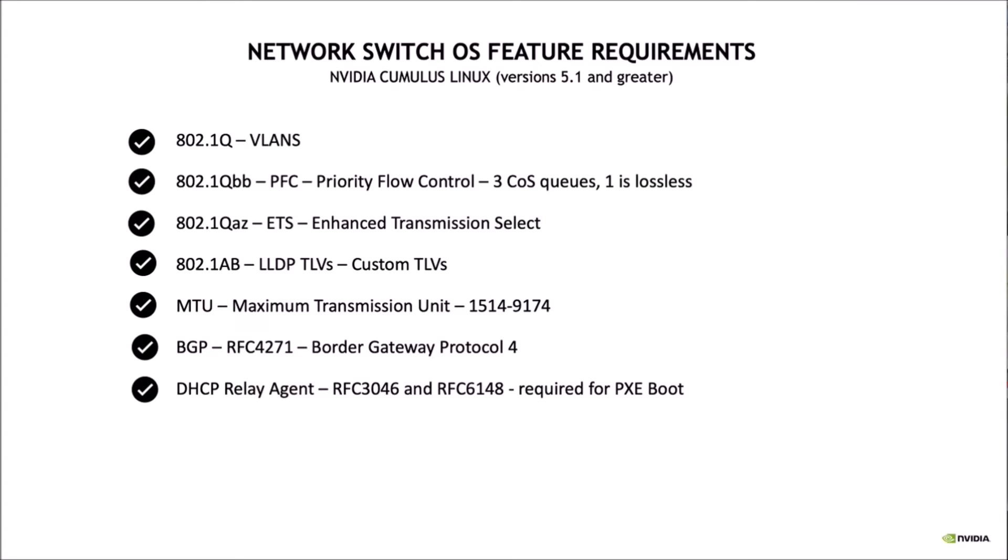The requirements that were on that webpage that Henry was showing earlier are these, so you can go there and get into the details. The only one that we had to do recent work on was the 802.1AB — that's what Henry focused on — the LLDP TLVs and the custom TLVs for the 22H2 version of the networking requirements. If you look at the 21 or early 22 requirements, there were only a couple of those custom TLVs. The 22H2 added several more, so we went and did the development for that.